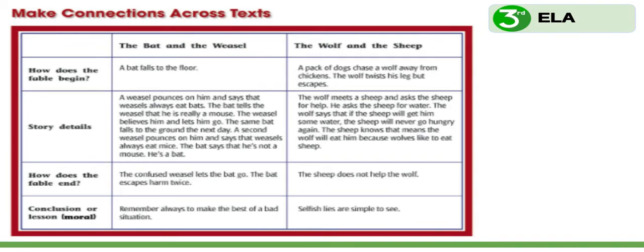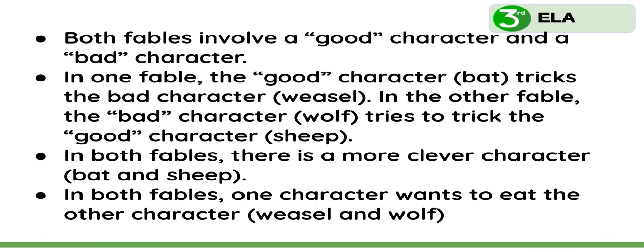When we organize our information this way, it helps us stop and think about how these two fables are alike and how they're different. Let's look at a few ways we can compare and contrast these two stories. Both fables involve a good character and a bad character. In one fable, the good character — the bat — tricks the bad character, the weasel. In the other fable, the bad character — the wolf — tries to trick the good character, the sheep.